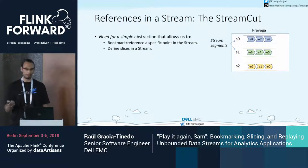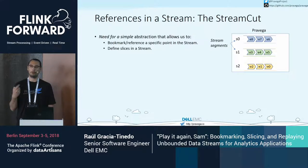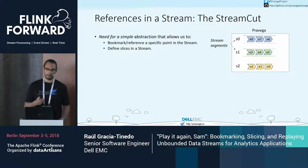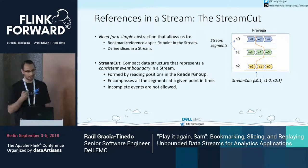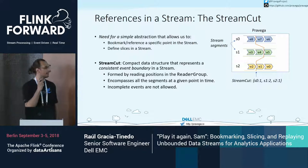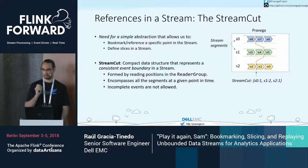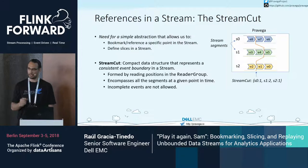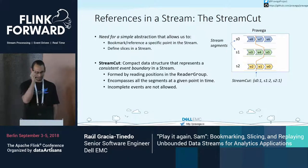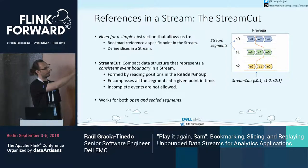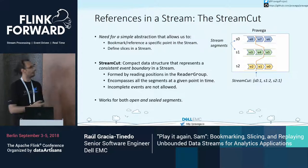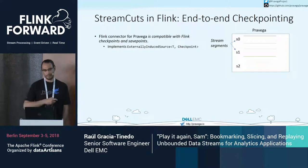Apart from streaming and batch access, developers need a way to set references in an unbounded stream — references that define slices of interest. To this end, Pravega provides the stream cut abstraction. A stream cut is a data structure that defines a consistent event boundary in a stream at a given point in time. Since the number of open segments may vary, a stream cut is essentially a consistent boundary represented by the read positions in a set of segments, and it works for both open and sealed segments.